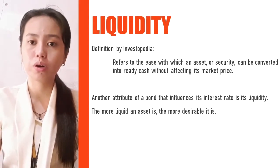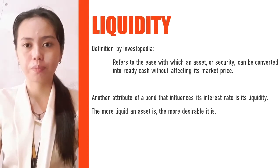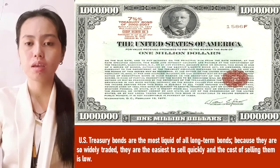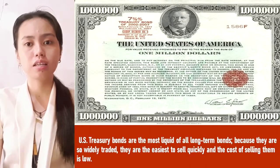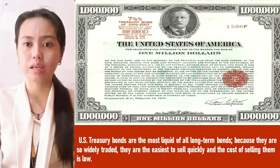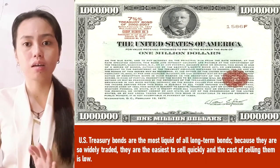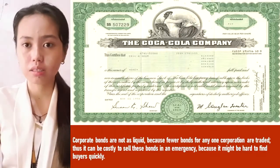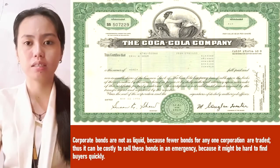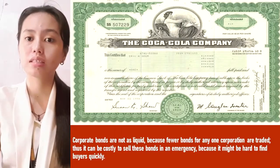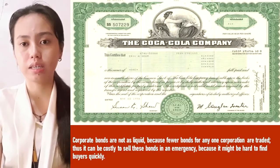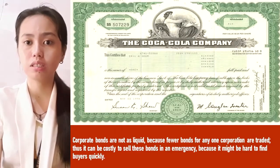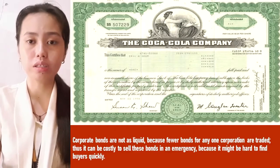The more liquid an asset is, the more desirable it is. The US Treasury bond is an example of an instrument that has high liquidity because it is widely traded and it sells quickly, and the cost of selling it is quite low. Meanwhile, the corporate bond is not as liquid as the US Treasury bond because it is not widely traded. It can be costly to sell in an emergency because finding buyers for it might be quite hard.